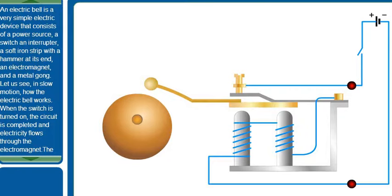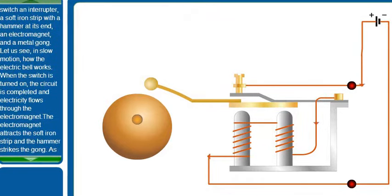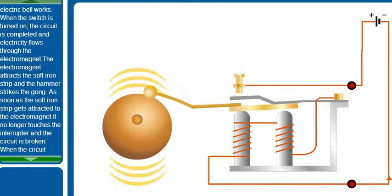Let us see in slow motion how the electric bell works. When the switch is turned on, the circuit is completed and electricity flows through the electromagnet. The electromagnet attracts the soft iron strip and the hammer strikes the gong.